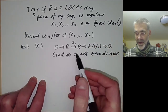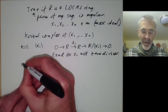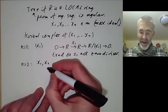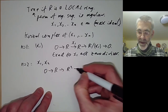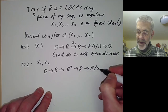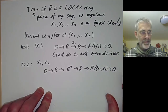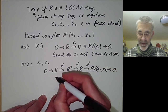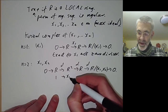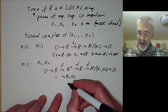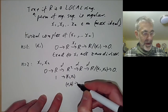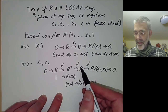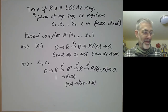For n equals 2, we take a sequence of two elements and define the Koszul complex as: 0 goes to R, goes to R squared, goes to R, goes to R over x1, x2, goes to zero. The differential is defined as follows: it takes the element 1 to (x1, x2) in R squared, and it takes an element (a, b) in R squared to x2·a minus x1·b. The map from R to R over (x1, x2) is the obvious quotient map.